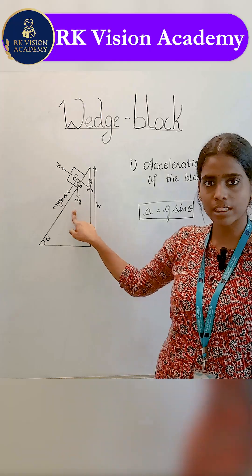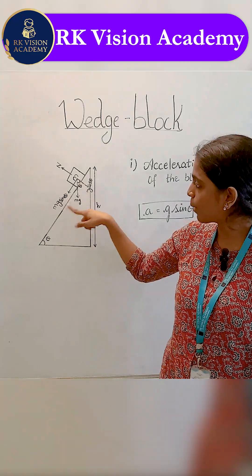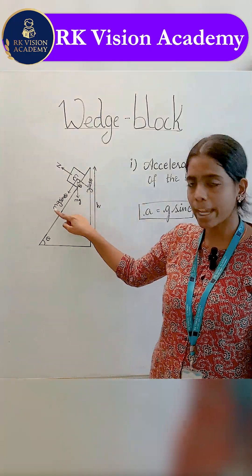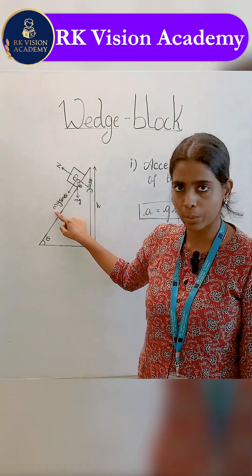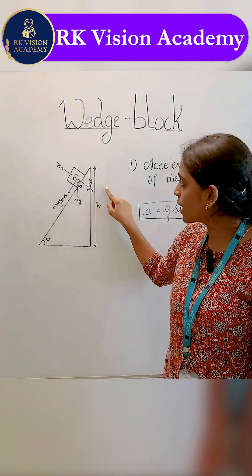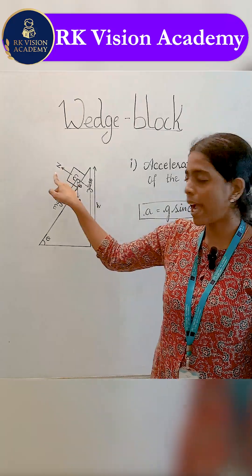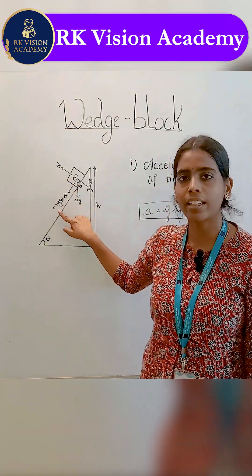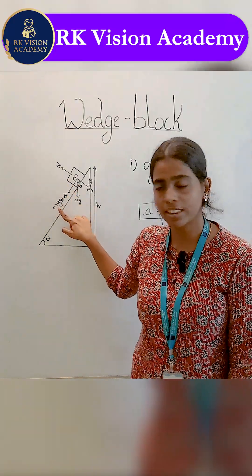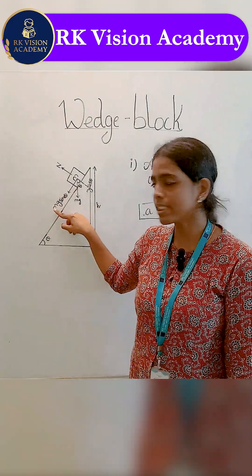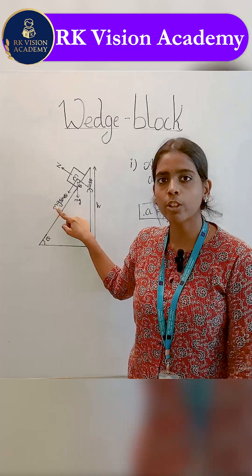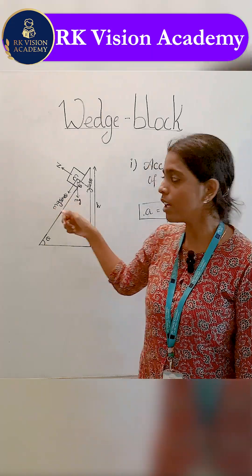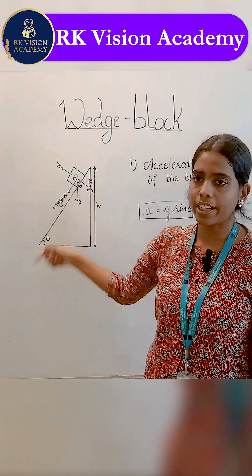The gravitational force gives us two components: Mg cos theta and Mg sin theta. Mg cos theta is balanced by the normal force, whereas Mg sin theta is not balanced. This Mg sin theta gives the block its acceleration, causing it to slide.